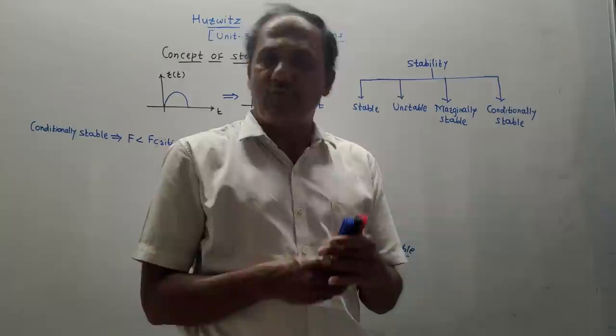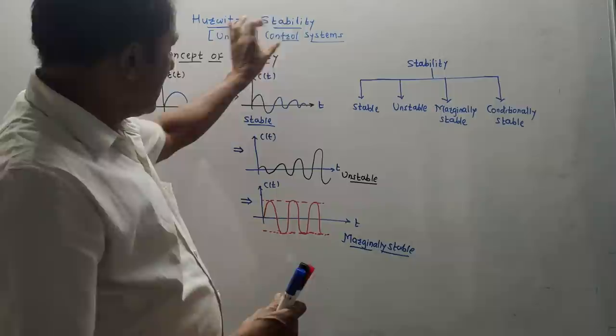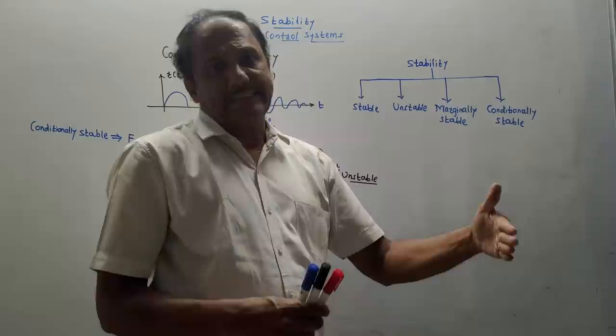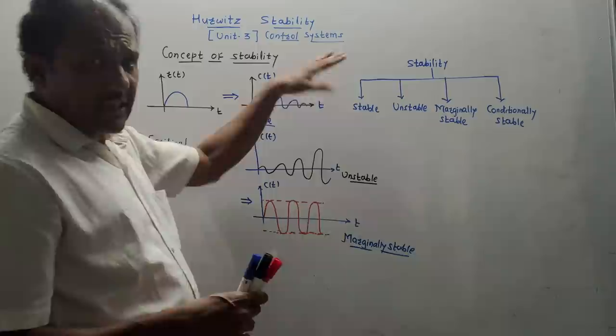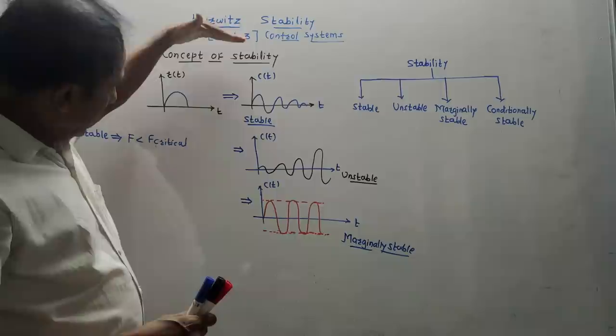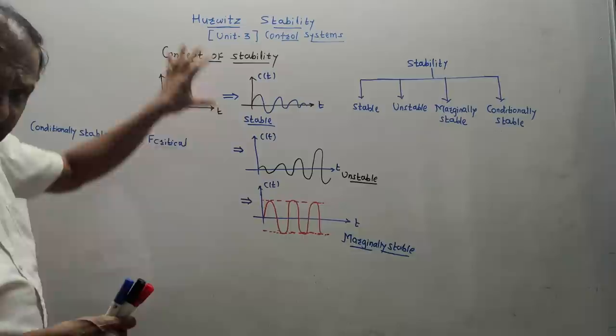Hello and welcome back to this channel. Dear students, let us start preparation for the NSEM exam. Presently I'm talking about the subject control systems. We'll be preparing unit number three to unit number six. There are so many tough calculations like root locus, Nyquist plot, Bode plot and so on. So without wasting time, let us start today's topic, which is Hurwitz stability criteria, from unit number three of control systems.